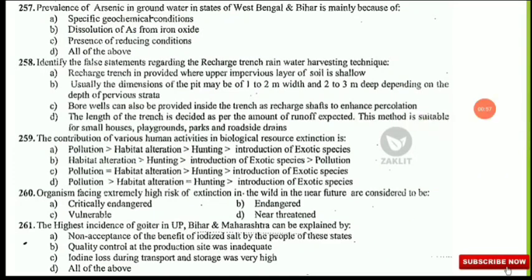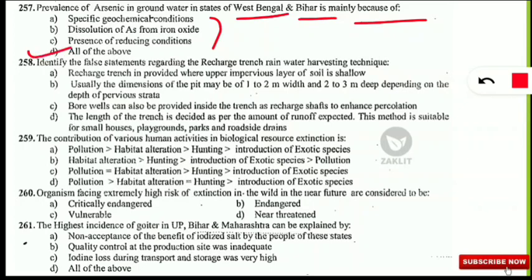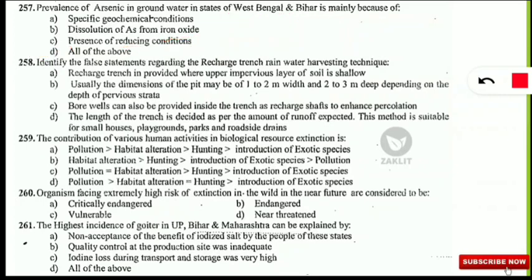The first question is: prevalence of arsenic in groundwater in the states of West Bengal and Bihar is mainly because of which reason? The correct option is 'all of the above' because specific geochemical conditions present in West Bengal and Bihar, dissolution of arsenic from iron oxide increasing its concentration, and the presence of reducing conditions (not oxidizing) all contribute to higher arsenic concentration in groundwater.